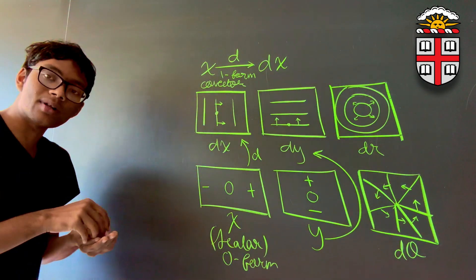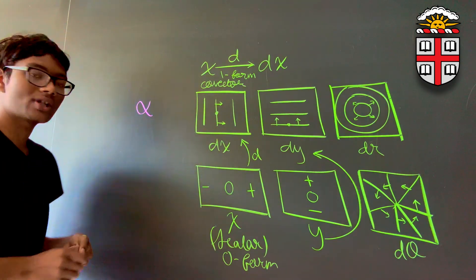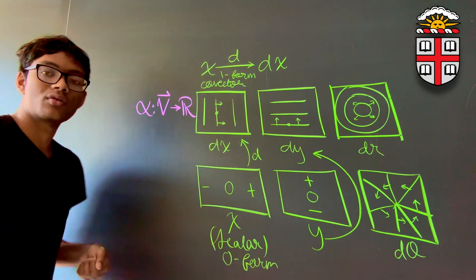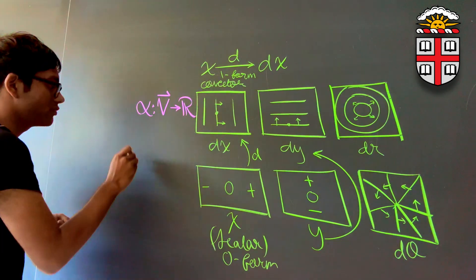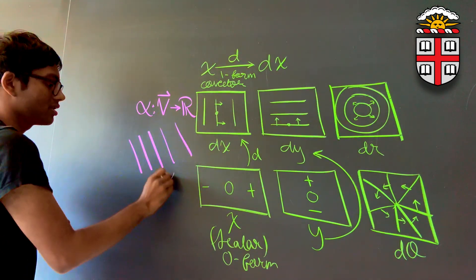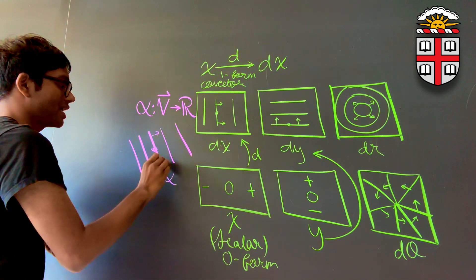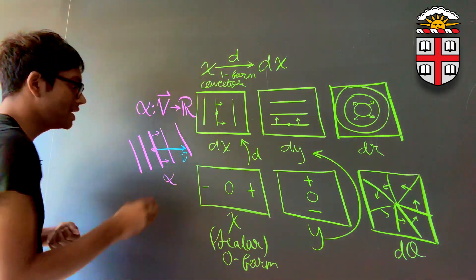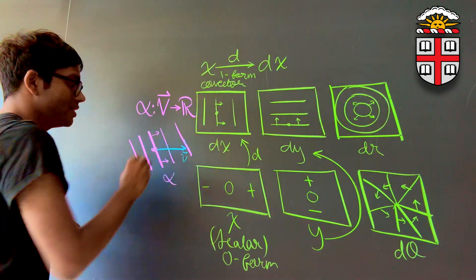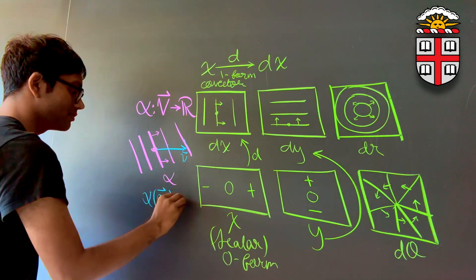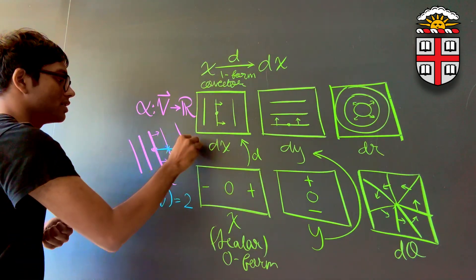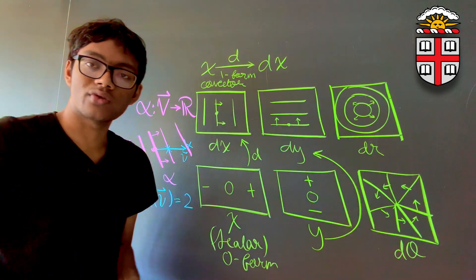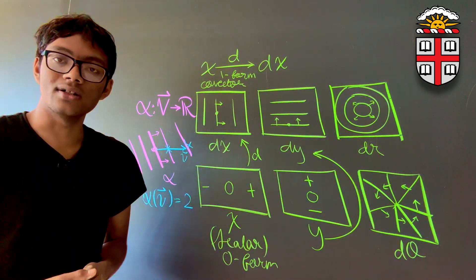Now we're going to put these concepts to use and see how these co-vector fields transform vectors into scalars. The whole idea behind a co-vector was that it was some kind of a function alpha that was able to convert a vector into a scalar or real number. Recall that if you had some kind of a co-vector field, with some kind of an origin and direction of ascent, and there was some kind of a vector v in this field, all you had to do was count how many contour lines v pierces. Alpha of v would simply be 2 because the vector pierces 1 and 2 contour lines.